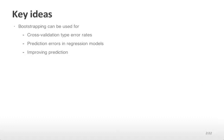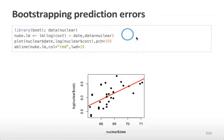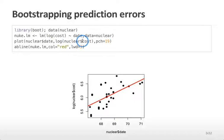First we're going to be talking about bootstrapping prediction errors. We're going to use the same dataset used previously, the nuclear dataset from the boot package. We're going to fit a linear model relating the log of the cost to the date that the reactor was created, and then plot the observed values — date versus log cost — and the fitted values in red.